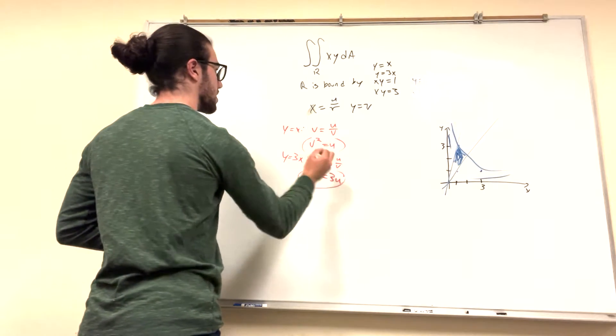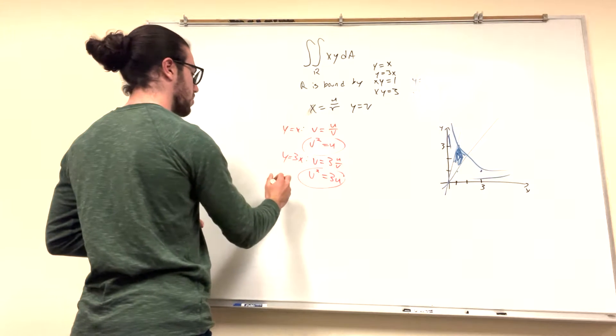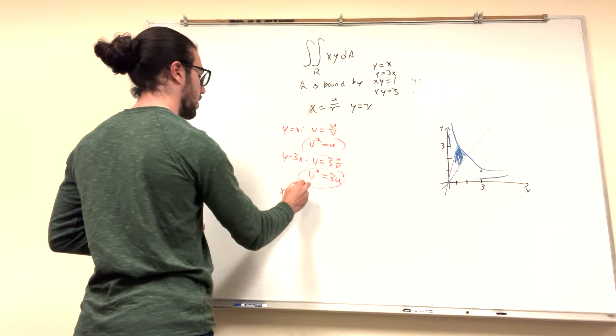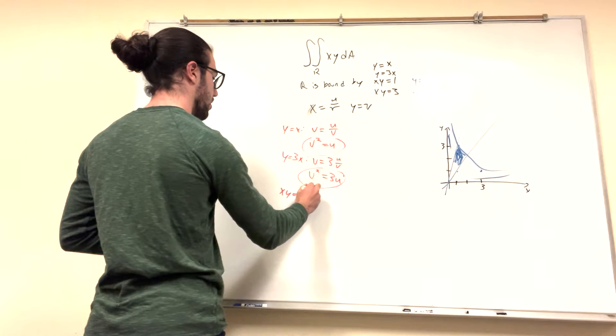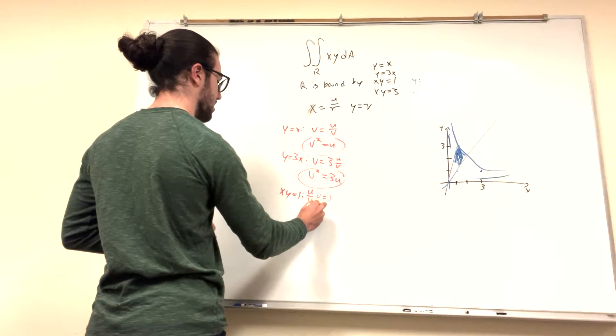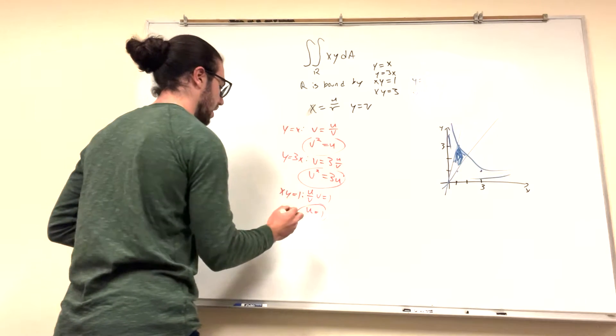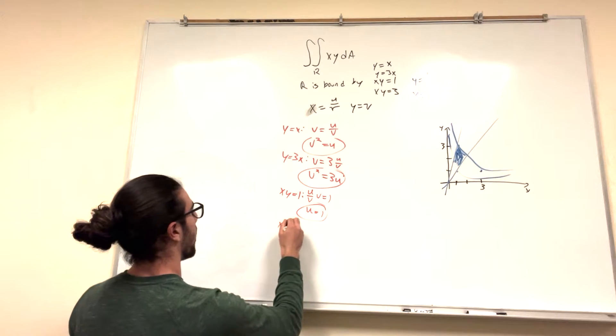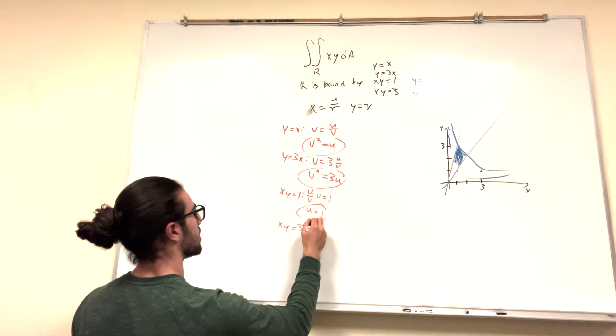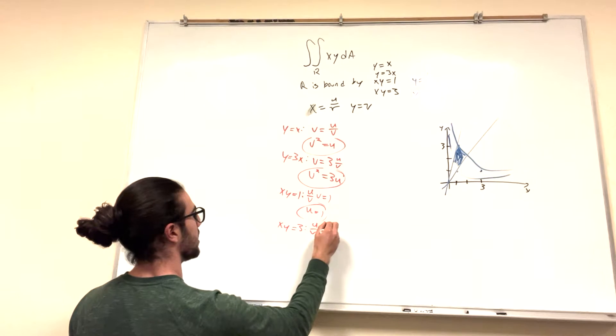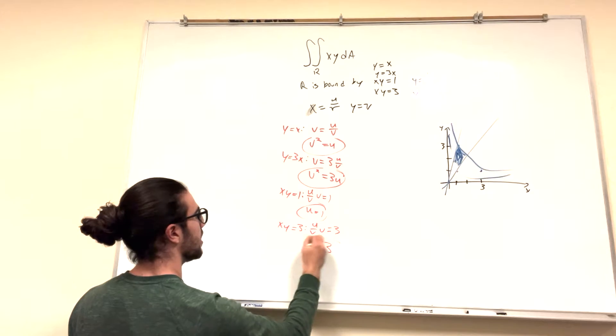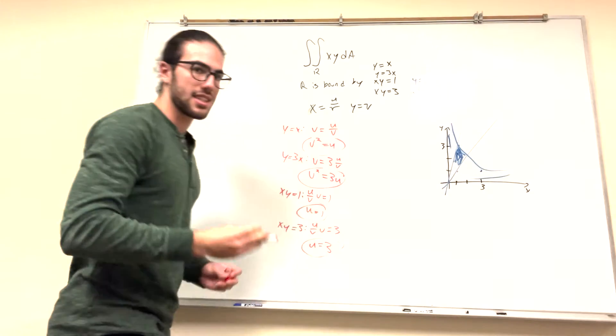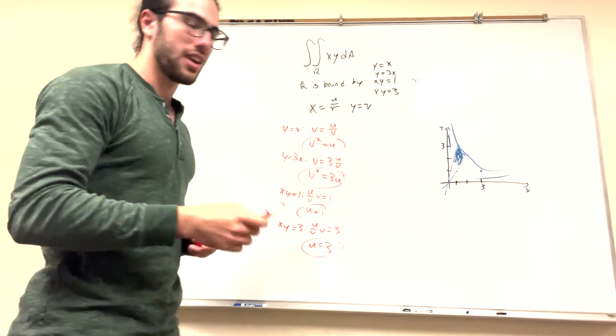Now we have, so this is another line. We have xy equals 1. Now we rewrite this. You'll have u over v times v equals 1, which is just u equals 1. This is another line. And xy equals 3. That turns into u over v times v equals 3, which just gives you, of course, u equals 3. So now that we have these four lines turned, basically changed, we can write another graph.